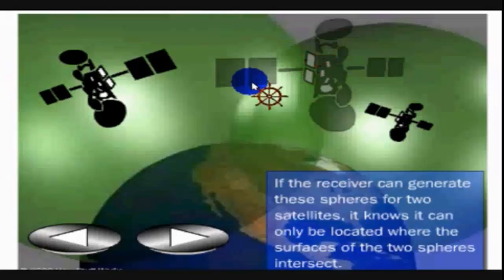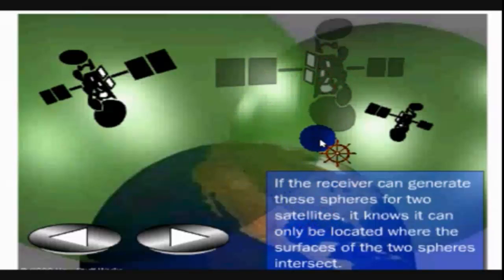What we can see here is the intersecting area of the two spheres, which means we are exactly somewhere in this area.